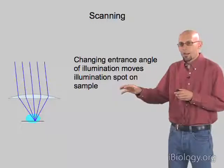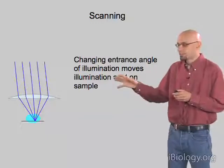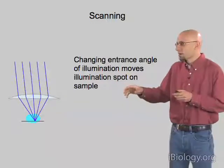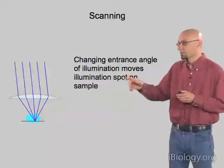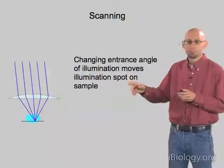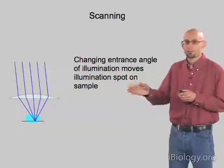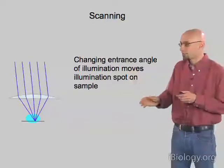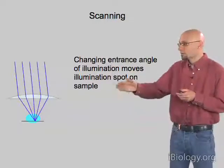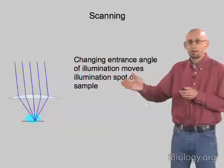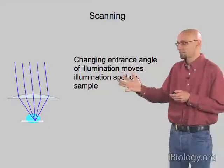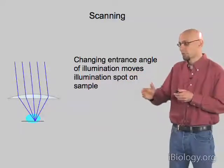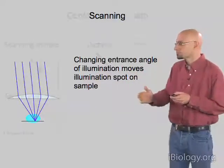You might be wondering how we still block the out-of-focus light, because now our spot will no longer necessarily be coincident with a pinhole. Before, we had the pinhole drawn exactly on the center of the optical axis of our microscope. But now as we move the focal spot off-axis, how do we make sure that that light still reaches the pinhole and goes through it, and doesn't get blocked by the pinhole?